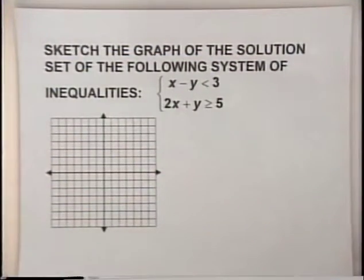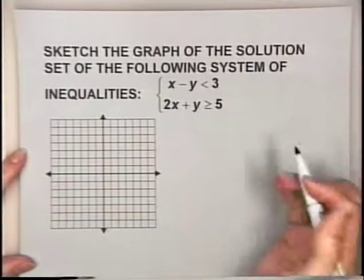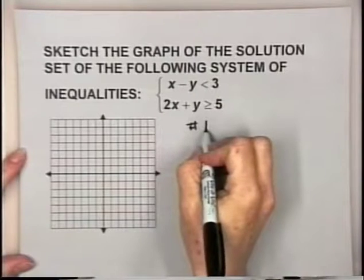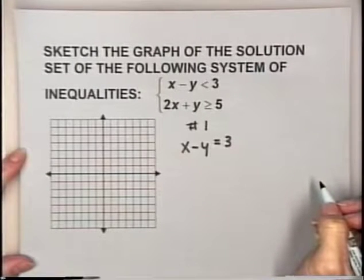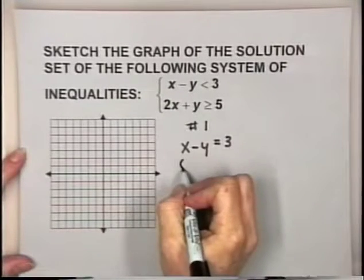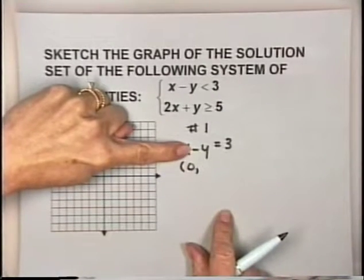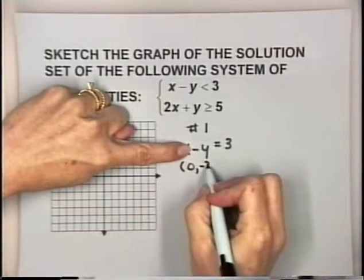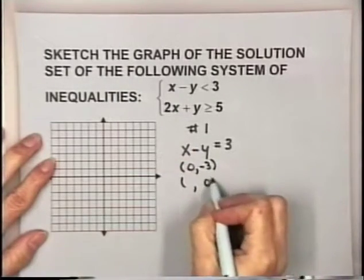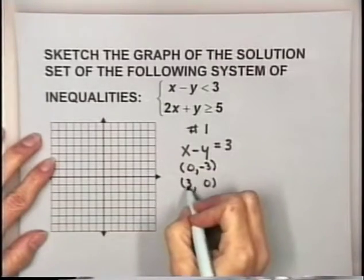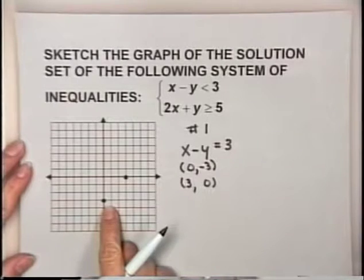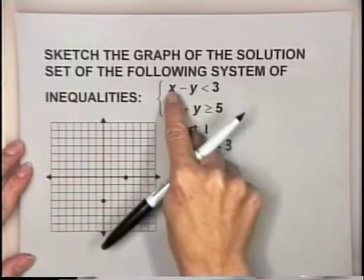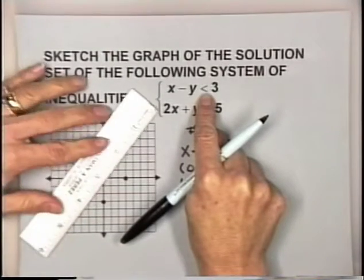Let's sketch the graph of the solution set of the following system of inequalities. For inequality number one, the corresponding equation is x minus y equals 3. Finding intercepts: if x is 0, then y is negative 3; if y is 0, then x is 3. So we plot the points (0, -3) and (3, 0). This inequality does not include equals, so this is a dotted boundary line.